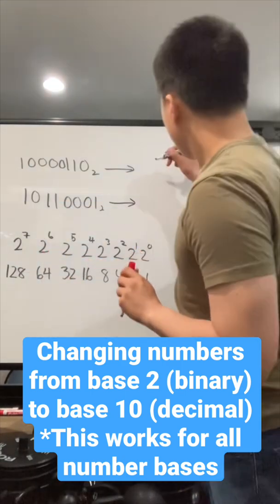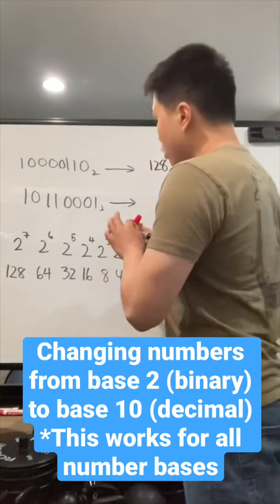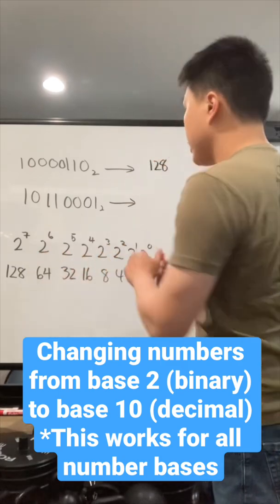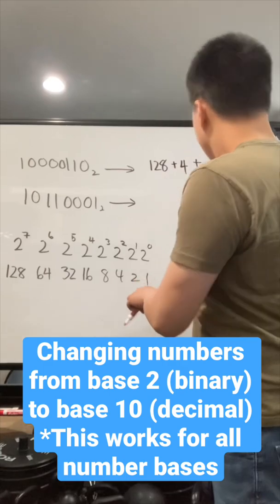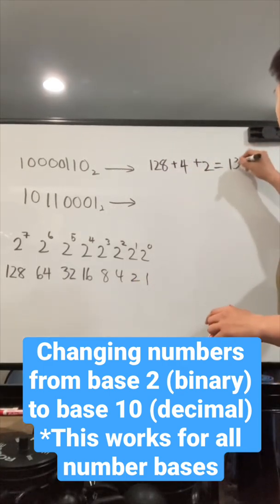We have 128, and then there's 4, 0, so 4 of them are gone, and then it's going to be plus, what is that, 4 plus 2. That's going to give us 134.